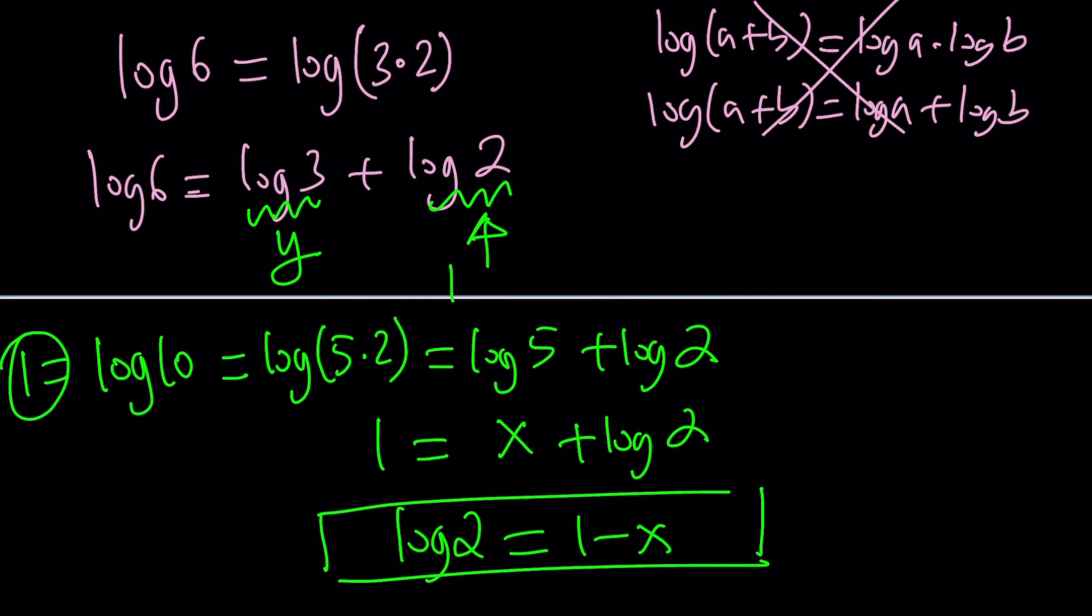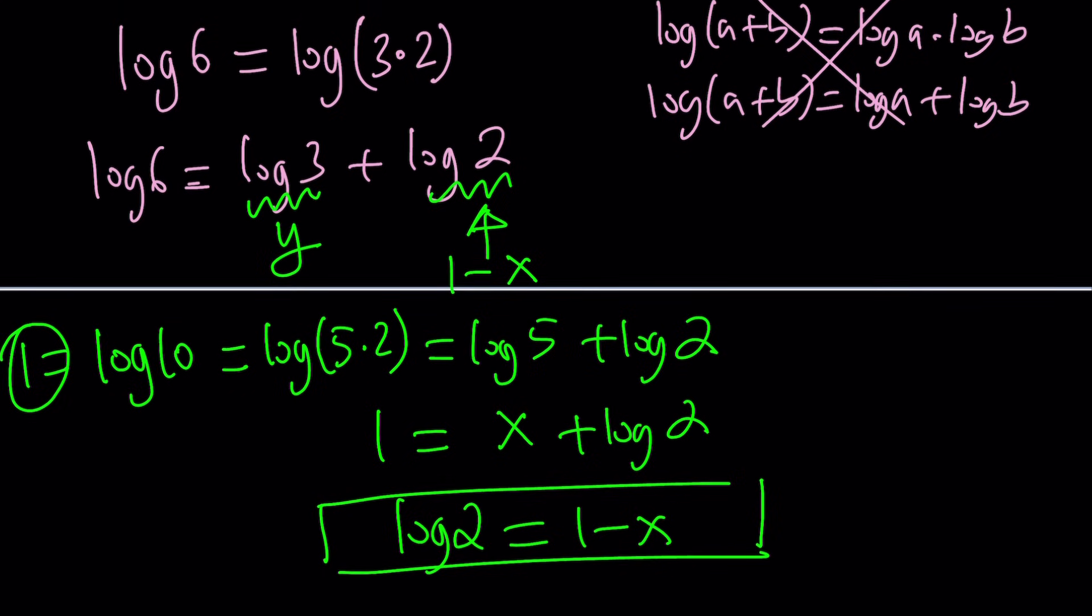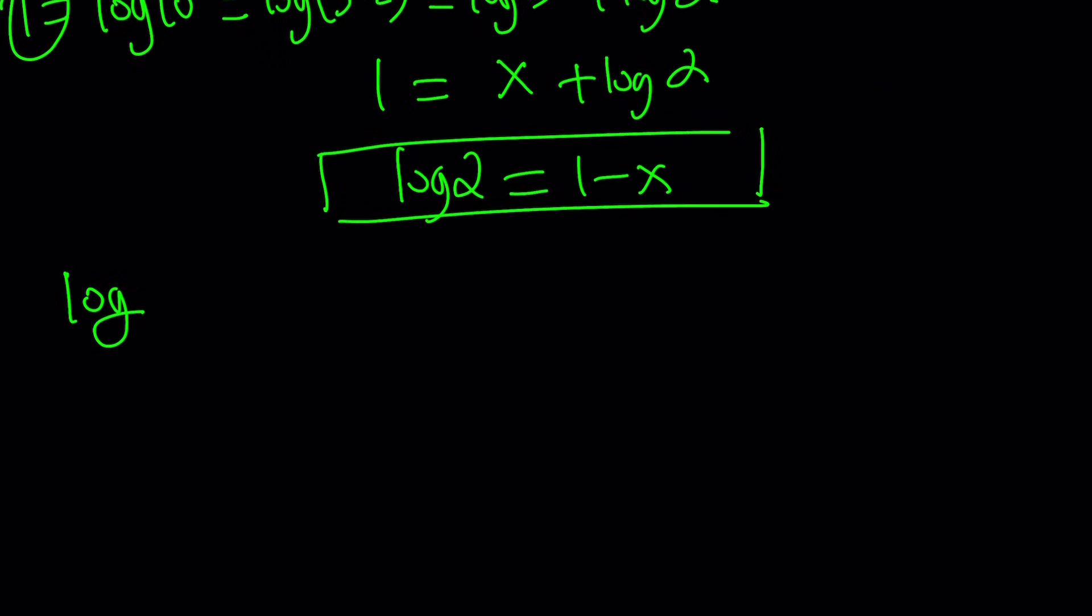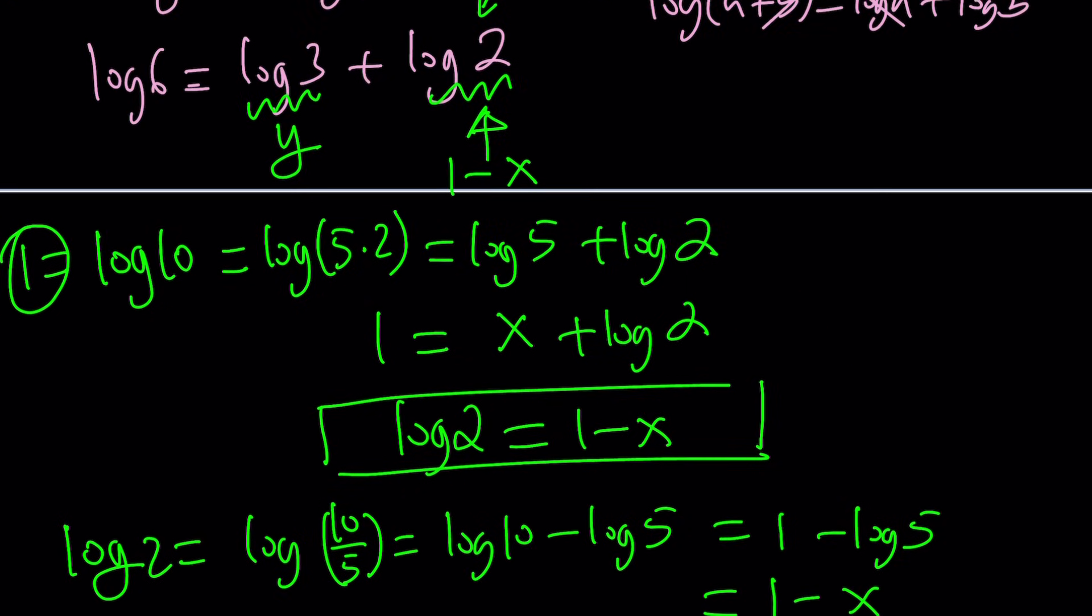By the way, that's not the only way to do it, because you could also think of it this way. I do know log five, I need to find log two. So to find log two, I can write two as log ten over five, and then use the quotient property. And of course, log ten base ten is one, and this is one minus log five, but log five is x, so this is going to be one minus x. So either way, you're going to get the same answer.